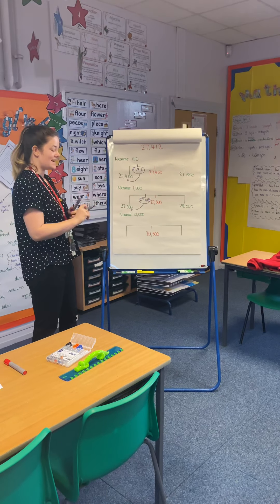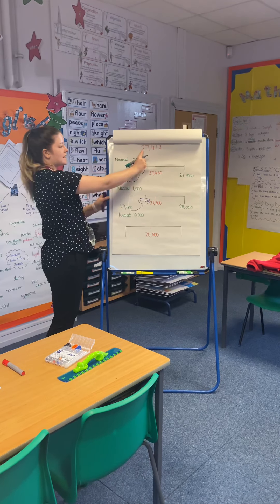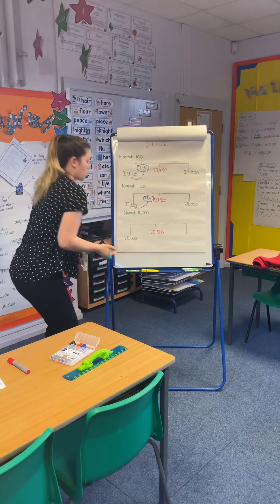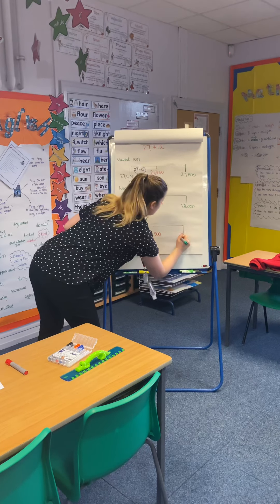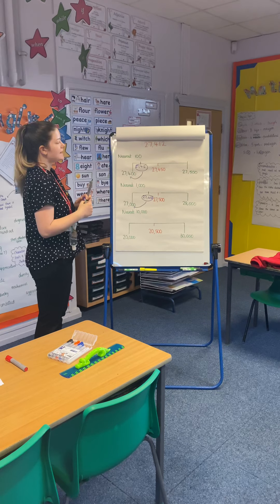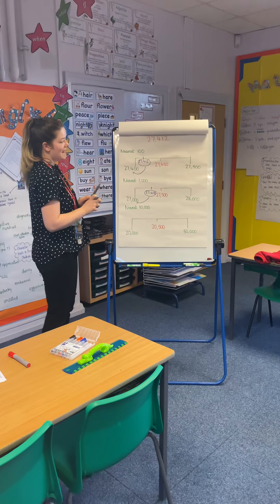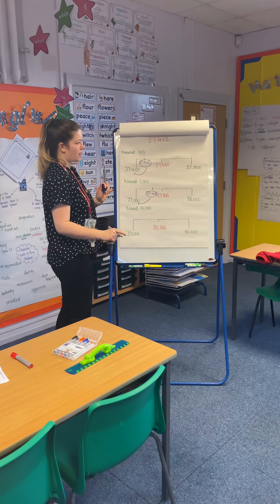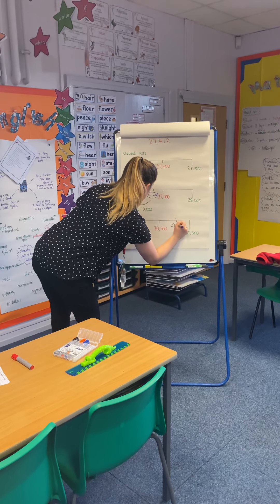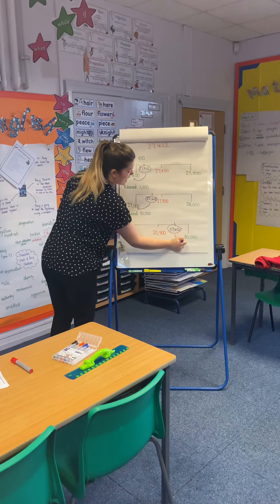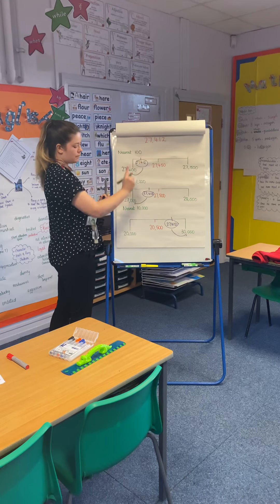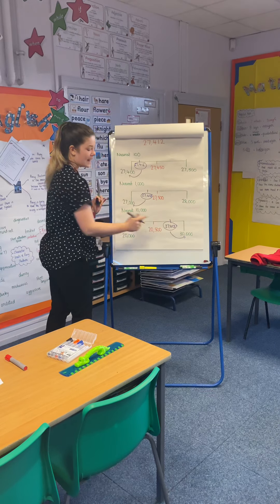Let's have a go to the nearest 10,000 together. I can see that there are two 10,000s in my number, so 20,000 is going to go at the start of my number line. Add 10,000 — 30,000 is going to go at the end. Looking at 27,412, I can see that that is greater than 25,000. Mark that about here on my number line. We can see that 27,412 is closer to 30,000 than it is to 20,000, so rounded to the nearest 10,000 it is 30,000.